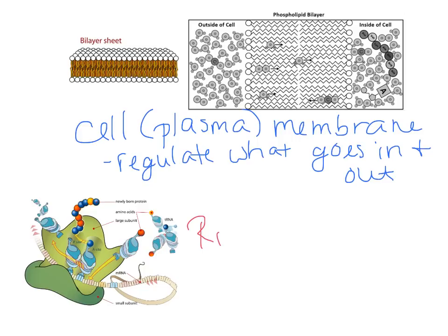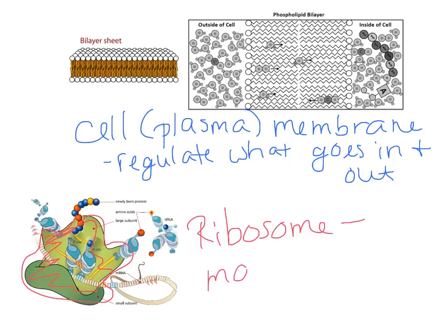The ribosome is found in both prokaryotic and eukaryotic cells, and its job is to make proteins. Proteins determine the chemical reactions, the kind of cell, and how the cell works with other cells — they are critical for the cell's survival. The main things you need from this lesson are the differences between prokaryotic versus eukaryotic cells, what all the different organelles do, and being able to recognize those from diagrams and pictures.